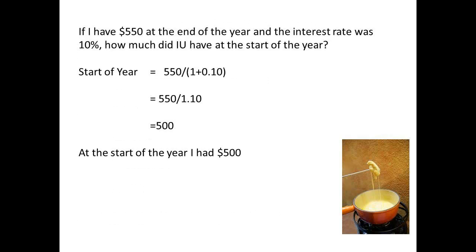Now, let us do the calculation the other way around. At the end of the year, I have $550, and the interest rate was 10%. How much do I have at the start of the year? In this case, I start with the final amount and divide. So, 550 divided by 1.10 gives 500. The amount at the start of the year was $500.